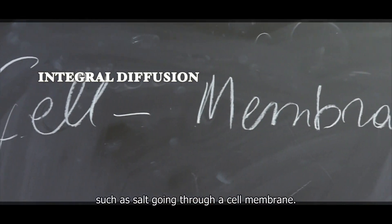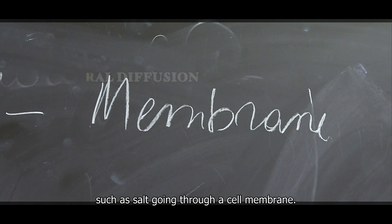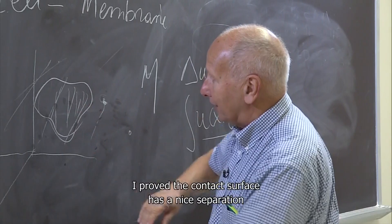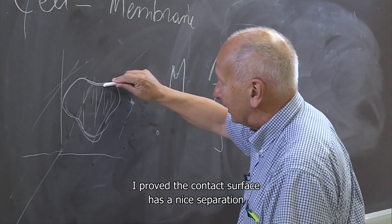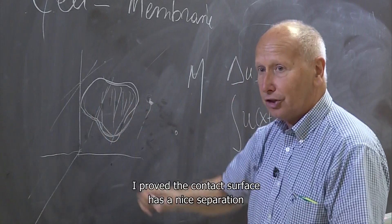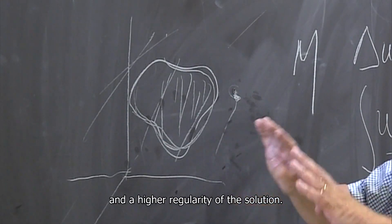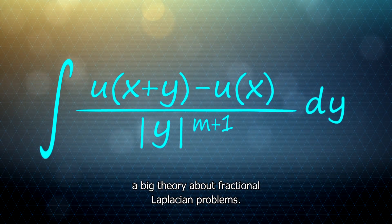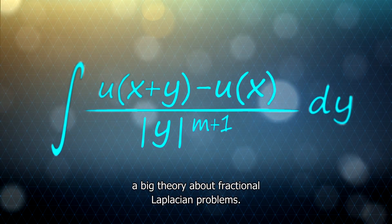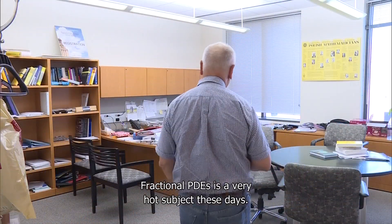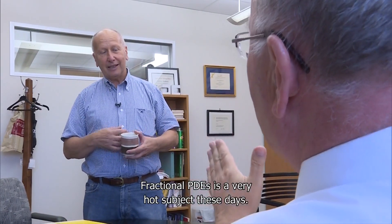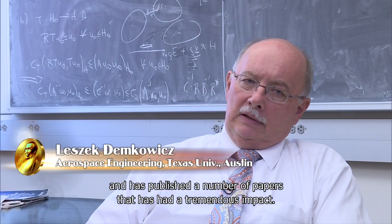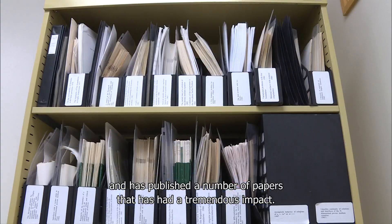Another of Caffarelli's obstacle problems is integral diffusion, such as a sort going through a cell membrane. This is an integral diffusion along the surface. It proves that the contact sets have a nice separation — a higher regularity of the solution. And so there became a big theory about fractional Laplacian problems. Fractional PDEs is a very hot subject these days.